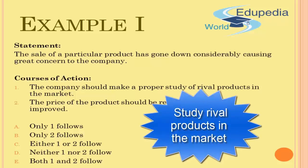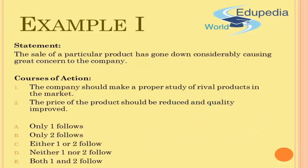Evaluating course of action one: the company should make a proper study of rival products in the market. Is it relevant to the problem? Of course — the sale has gone down, so studying rival products makes sense to find out what other companies are doing that ours is not. Is it of appropriate magnitude? Yes. Does it create any undesirable outcomes? Conducting a study should not lead to new problems. So this is a good solution.